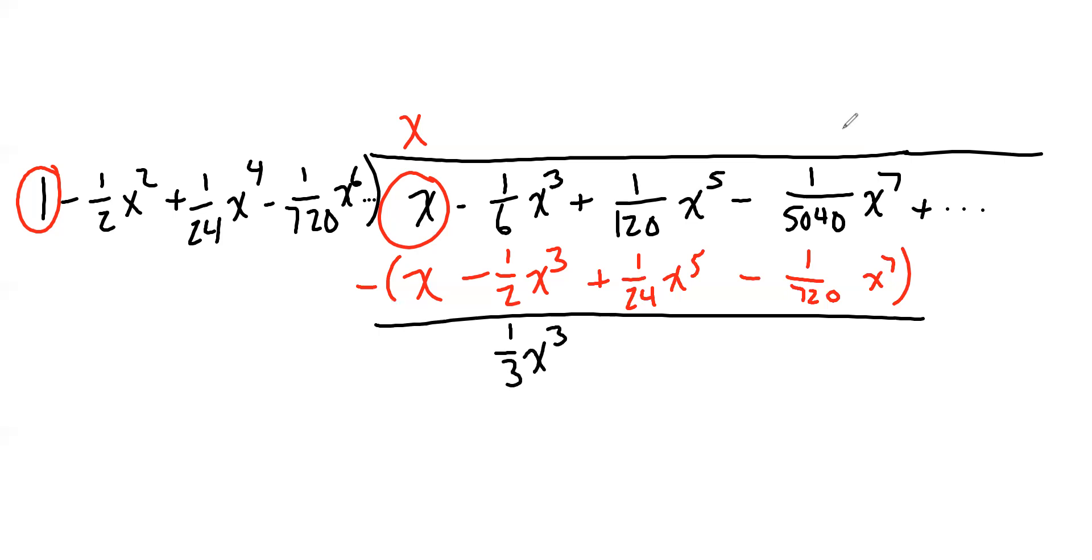And in the x to the 5th column, we have 1 over 120 x to the 5th minus 1 over 24 x to the 5th. Let's see. That'll be negative 4 over 120. So negative 1/30 x to the 5th. Let me double check that. 1 over 120 minus 1 over 24 times 5 will give us a common denominator. On the top 1 minus 5 is negative 4 over 120. Yeah, negative 1/30. If your fraction arithmetic goes slower, that's perfectly fine. But you should be able to do the fraction arithmetic.